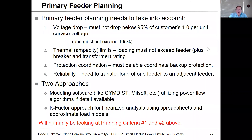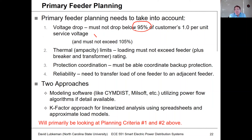In primary feeder planning, there are a number of different things you need to be looking at. You're going to be looking at voltage drop, and what's important is that the voltage doesn't drop below 95% of nominal. There's also a requirement that it doesn't exceed 105%, so you just can't boost voltage arbitrarily. We'll spend a lot of time on voltage drop this semester.